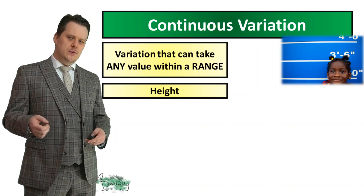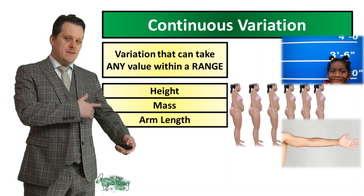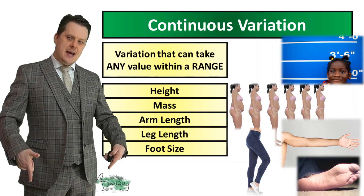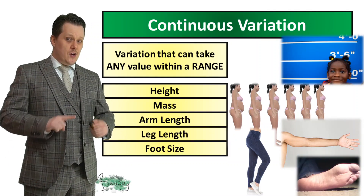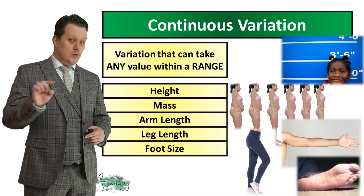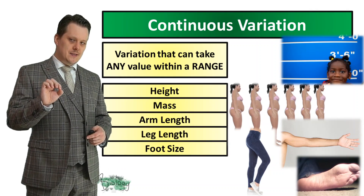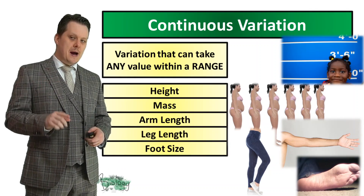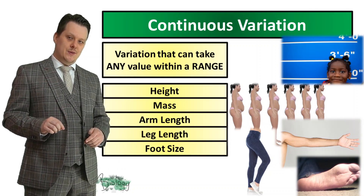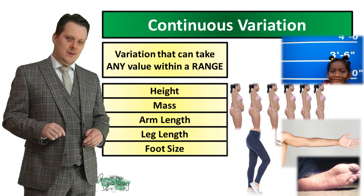Continuous variation also includes mass, the length of your arm, the length of your leg, and your foot size — not shoe size, foot size. And we'll talk about why shoe size isn't continuous variation a little later on.